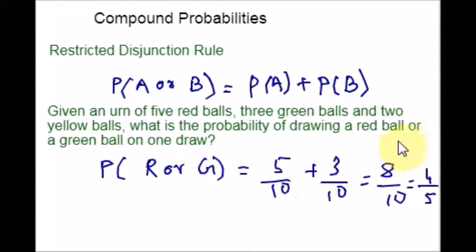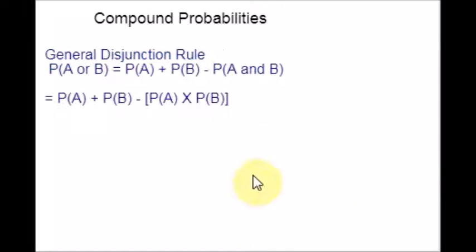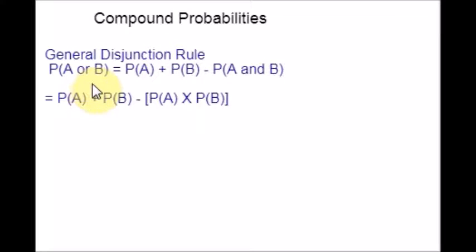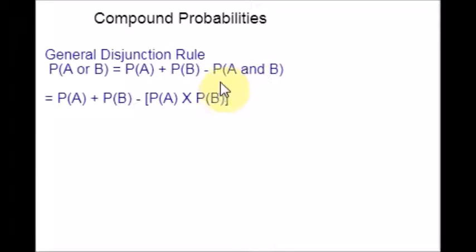Now let us move on to the last rule: the general disjunction rule. In case the events A and B are not mutually exclusive and independent, you can apply this rule. The formula is: probability of A or B equals probability of A plus probability of B minus probability of A and B.